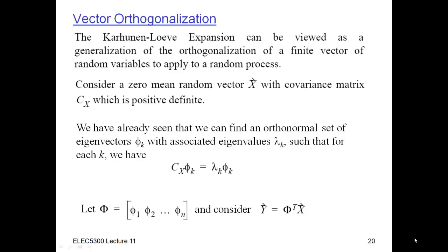Let's take a look at the case of a finite dimensional random vector. We have a finite dimensional random vector X that has covariance matrix C sub X. Given this covariance matrix, we can find a set of eigenvalues and eigenvectors. For an n-by-n matrix, we can find n eigenvectors and eigenvalues satisfying the eigenvector equation — meaning applying the covariance matrix to a vector just scales it without changing its direction.